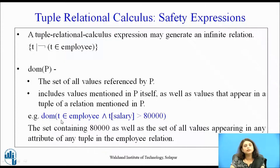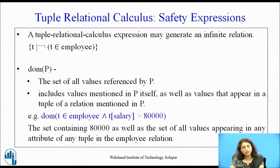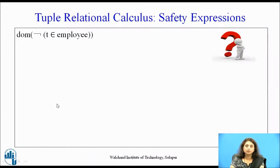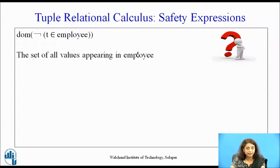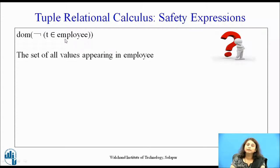For example, in {t | t ∈ employee ∧ t[salary] > 80,000}, the value 80,000 is explicitly in the domain, and employee has four attributes — employee id, employee name, department id, and salary — so all values of these attributes plus 80,000 form the domain. For the negation expression ¬(t ∈ employee), the domain contains all values appearing in employee. With four attributes and ten records, all forty values (after duplicate removal) form the domain.